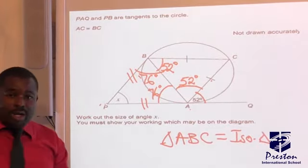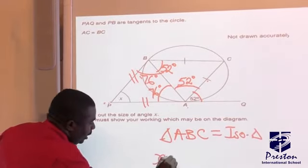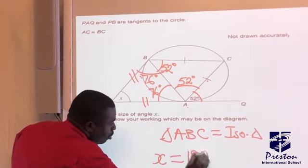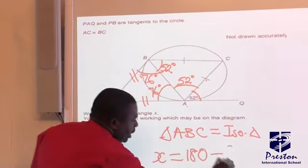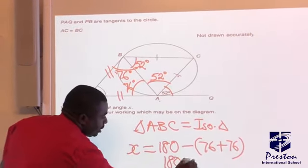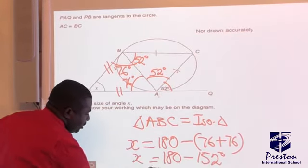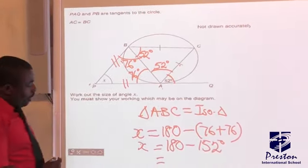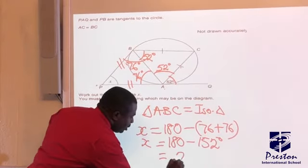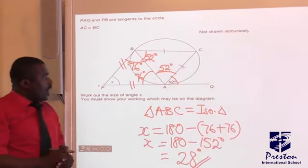Now to find the value of x. Sum of angle in the triangle is 180. Therefore, we can say x equal to 180 minus the addition of 76 plus 76. Here we are going to have 180 minus 152. Can you guess the answer? What is going to be the value of x? That means x is going to be 28.